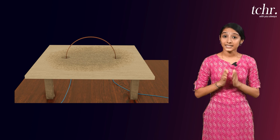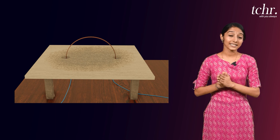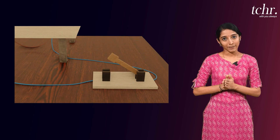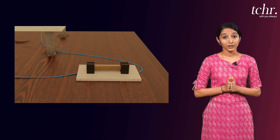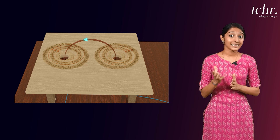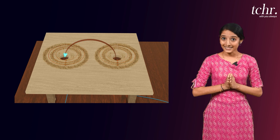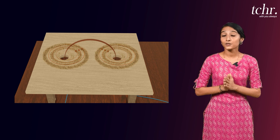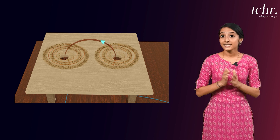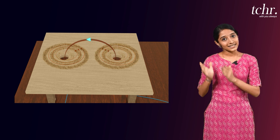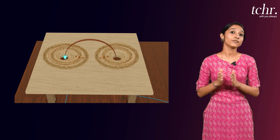We are placing iron filings on this cardboard so we can identify the magnetic field line pattern. Now let me switch on the battery so that current starts flowing in the circular loop. Observe how the magnetic field lines form patterns in the form of concentric circles at both ends — the magnetic field lines appear as concentric circles.